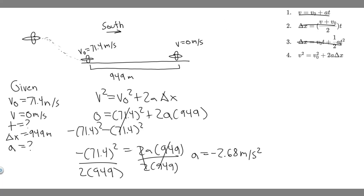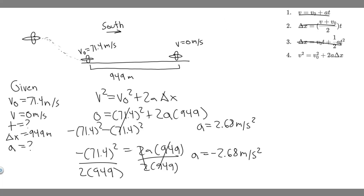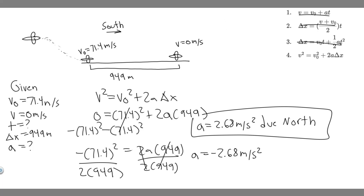They're asking for the magnitude and direction. The magnitude is just the absolute value — the positive value — so the magnitude of a is 2.68 meters per second squared. For the direction, the negative sign indicates the acceleration is opposite to the direction of travel. Since the jet is traveling south, the acceleration is in the opposite direction: due north. So the final answer is 2.68 meters per second squared due north.